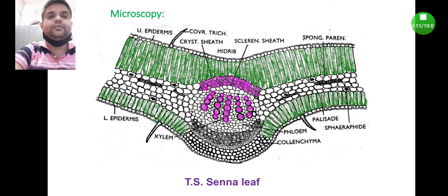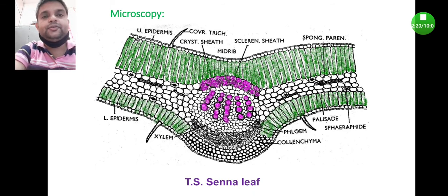Now coming to the microscopy, when you take the transverse section of the Senna leaf under the microscope, you will observe features like this. As usual, when you take the transverse section of any leaf, it consists of mainly two parts: lamina part and the midrib part.